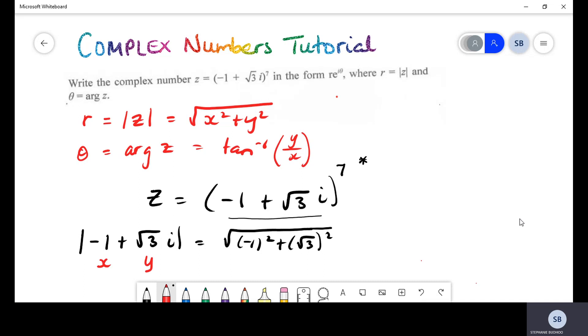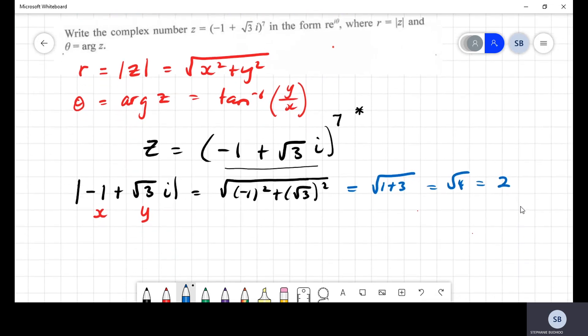So that's x squared, once again -1 all squared, plus y squared, √3 all squared. Now plugging these safely into your calculator should give you √(1 + 3), which is √4, which gives us a value of positive 2.